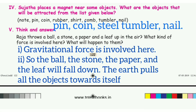Question 6: Sujitha places a magnet near some objects. What are the objects that will be attracted from the list given below? The answers are: pin, coin, steel tumbler, and nail.